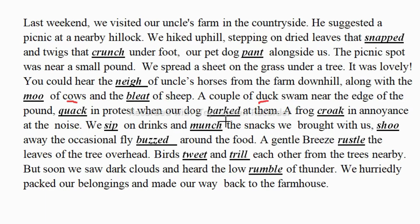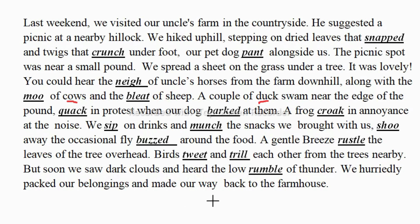And now here the dog is barking. A frog croaked in annoyance at the noise. We sipped on drinks and munched the snacks — munch means we are eating something. Then we shooed away the occasional fly when the bees were buzzing near the food. A gentle breeze rustled the leaves — rustle is when the gentle breeze moves the leaves of the tree overhead. Birds tweeted and called to each other from the trees nearby, sharing messages in a singing form. But soon we saw dark clouds and heard the low rumble of thunder. We hurriedly packed our belongings and made our way back to the farmhouse.